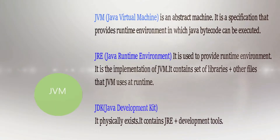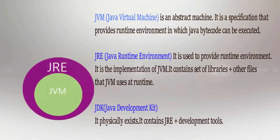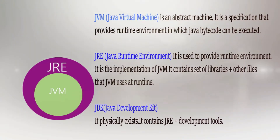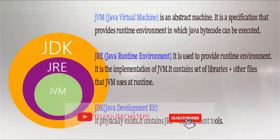First of all, what is JVM? JVM stands for Java Virtual Machine. JVM is an abstract machine — it is a specification that provides the runtime environment in which Java bytecodes are executed. JVM creates this runtime environment, and JVMs are available for many software and hardware platforms.